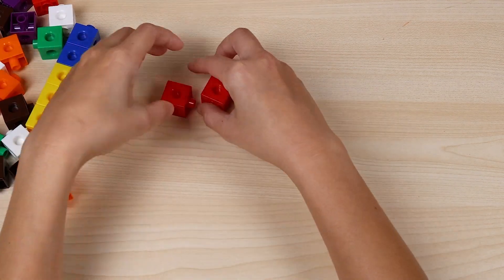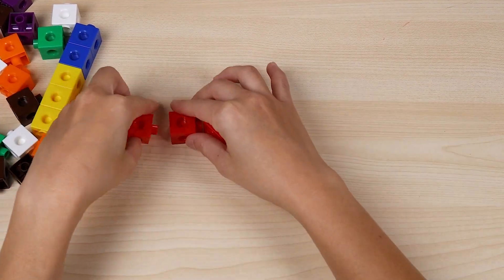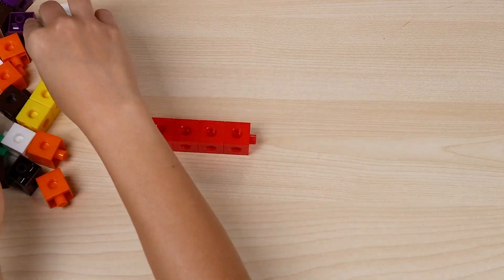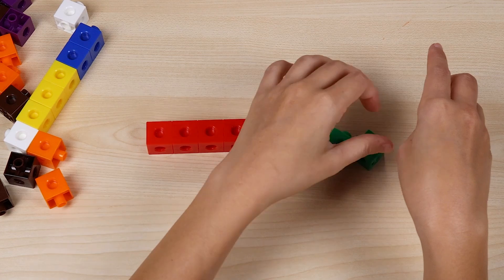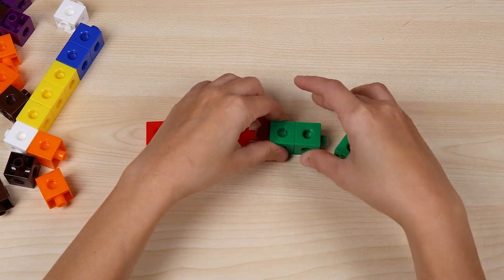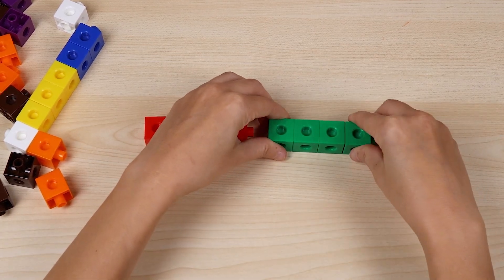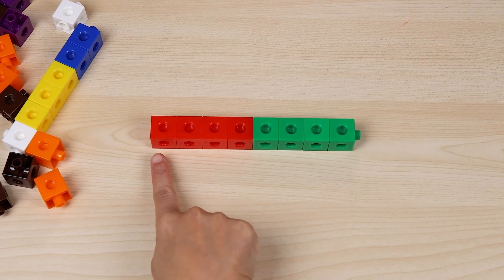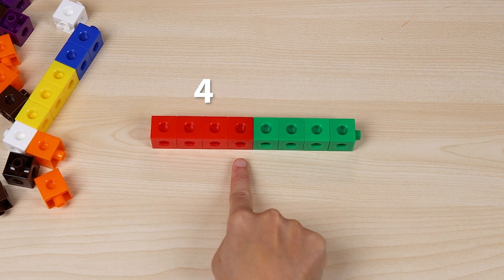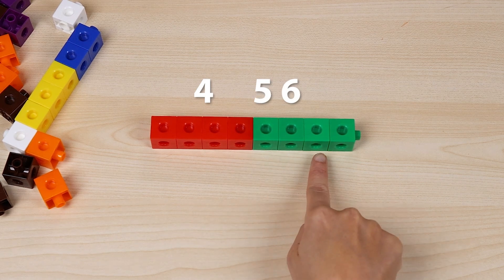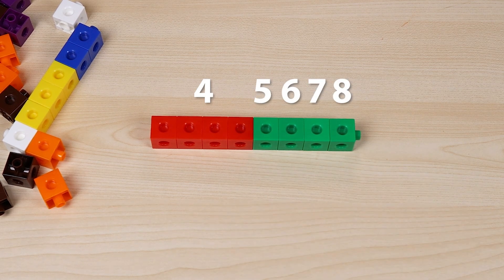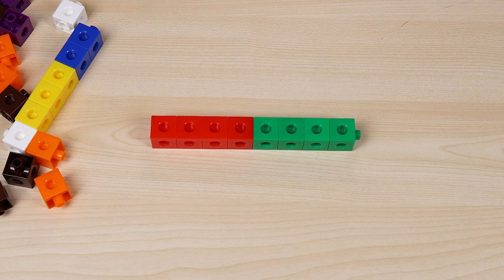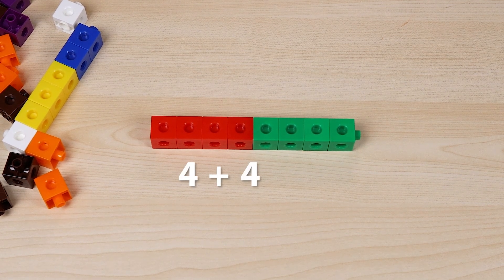Now let's take four red cubes and add four green cubes. We start with four and count on five, six, seven, eight. That's eight cubes in all. Four plus four makes eight.